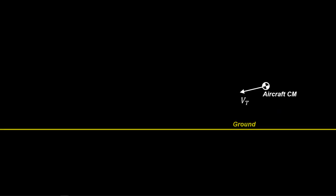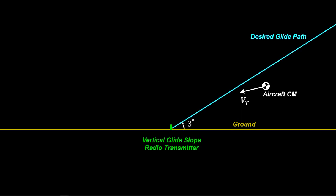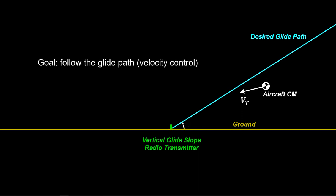During landing, a radio transmitter commands the desired glide slope — for example, 3 degrees from the horizontal. Instruments in the aircraft nose receive this guidance, and the objective is to make the aircraft follow the glide path at a desired airspeed.